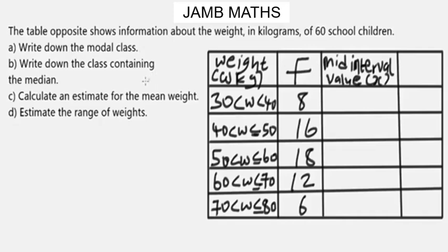For grouped frequency tables, data is grouped into classes unlike an ordinary frequency table. An important note about grouped frequency tables is that when finding the mean, we need to get the mid-interval value — we'll show you how to do that. But let's begin with the first part of the question: write down the modal class.